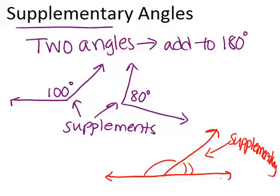Any time you see a straight line that's been divided into two parts, those two angles have to add up to 180 degrees. They have to be supplementary.